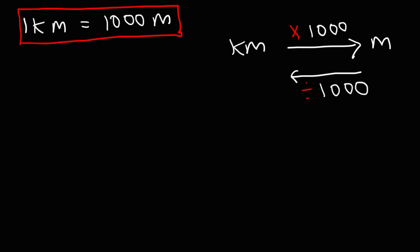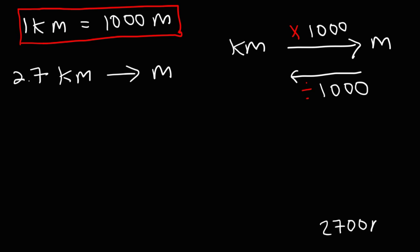Let's work on an example problem. Let's say we have 2.7 kilometers and we want to convert that into meters. What we need to do is take 2.7 and multiply that by a thousand, and so the answer is going to be 2,700 meters. That's the quick way of getting the answer.